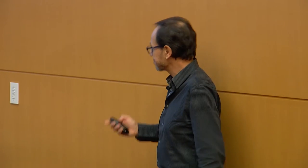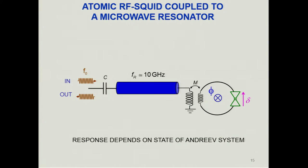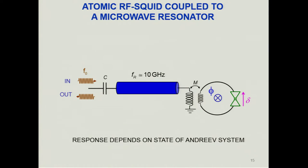To probe this physics, we include the atomic contact in a small superconducting loop so that we can phase-bias the system by applying a flux through the loop — this is the atomic SQUID, an RF SQUID. To probe the configuration of the Andreev state, we inductively couple this RF SQUID to a microwave resonator with a resonance frequency around 10 gigahertz.